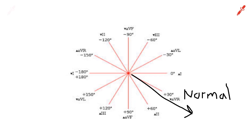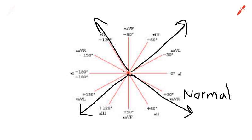Now, say Lead 1 was negative but AVF was a positive deflection. That means it's going away from Lead 1, so it can be going either this way or that way away from Lead 1. It's going towards AVF, so AVF will be positive. Thus the axis will be over here — this is left axis deviation.